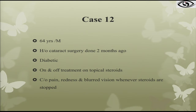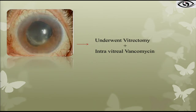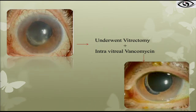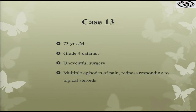Case 12: a patient who had cataract surgery a few months back had on-and-off flare-ups of inflammation treated with topical steroids. When we looked at the fundus, there was a plaque on the posterior capsule. We treated with vitrectomy and intravitreal vancomycin and he responded beautifully. Remember: a plaque on the posterior capsule can be confused with posterior capsule opacification, but if it is associated with multiple episodes of inflammation, do not forget this condition.